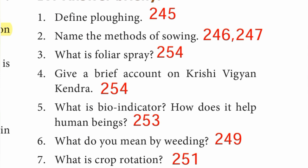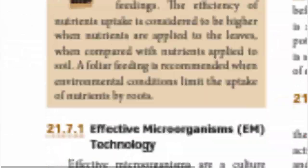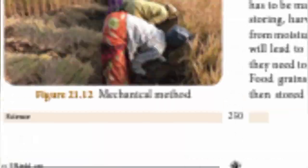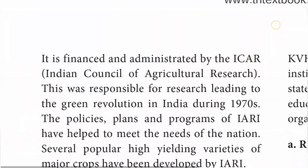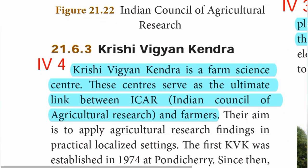Fourth question: give a brief account on Krishi Vigyan Kendra, page number 254. Krishi Vigyan Kendra is a farm science center. These centers serve as the ultimate link between ICAR — that is, Indian Council of Agricultural Research — and farmers.